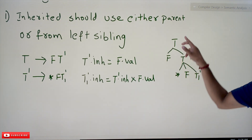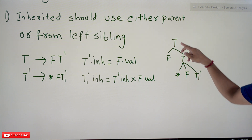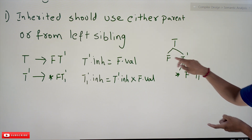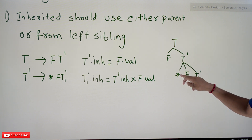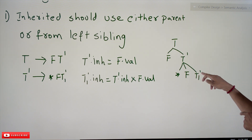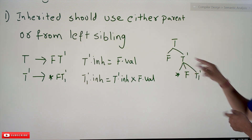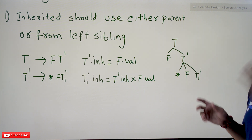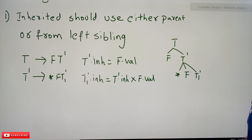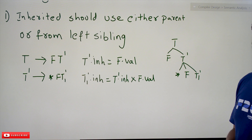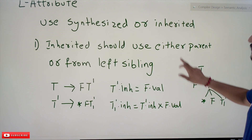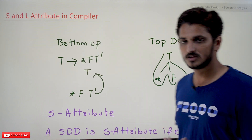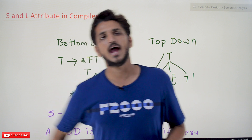Another example: for T' → * F T1', the attribute T1'.inherited is an inherited attribute using values from its parent or left sibling. In the evaluation of T → F T', starting top-down left to right: when we reach T' → * F T1', F and the parent T' are already available, so we can calculate T1'.inherited. This is an L-attribute definition. If you follow these conditions, you don't need to check for cycles because it will not form cycles in your attribute evaluation.